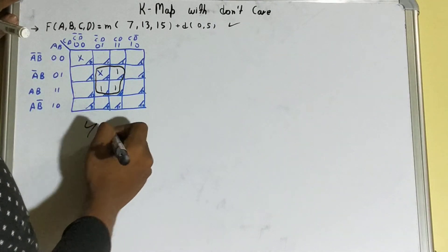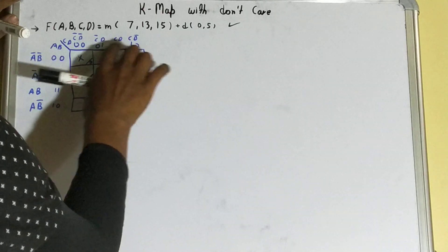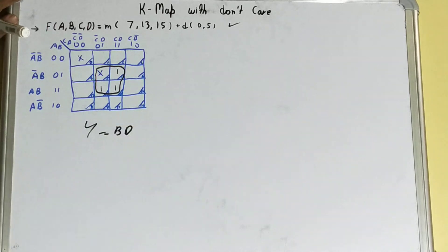Talking about the expression, now if we see what is not changing, your B is not changing over here and your D is not changing. So this is our final expression. If we would have considered two pairs, then it would have been a different scenario, right?